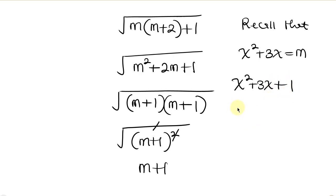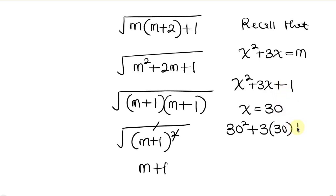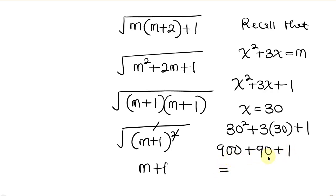Now also recall that x is equal to 30, from our first substitution. So wherever I see x I'm going to be putting 30. So this will be 30 squared plus 3 times 30 plus 1. Simplifying: 30 squared is 900, plus 3 times 30 is 90, plus 1. Adding together: 900 plus 90 plus 1 is 991. This is the final solution.